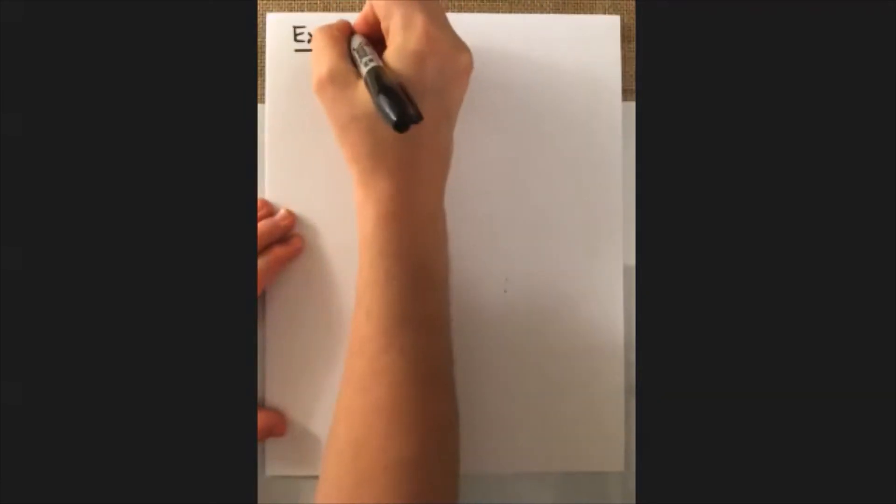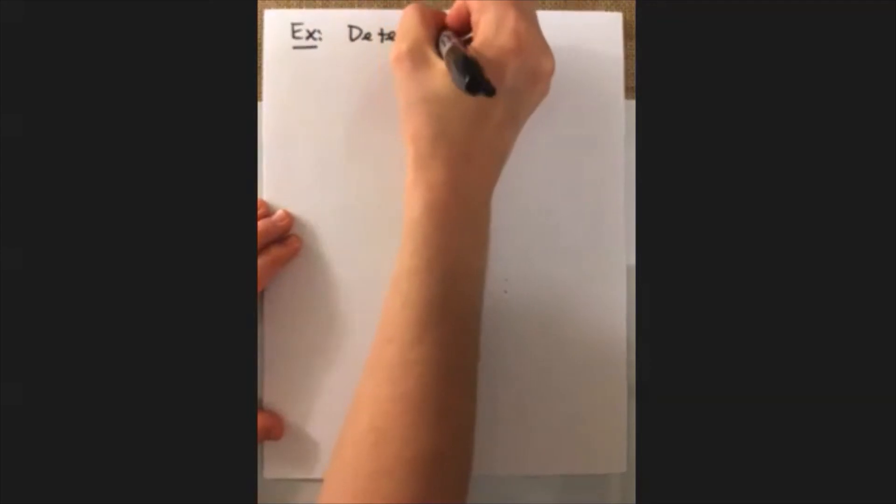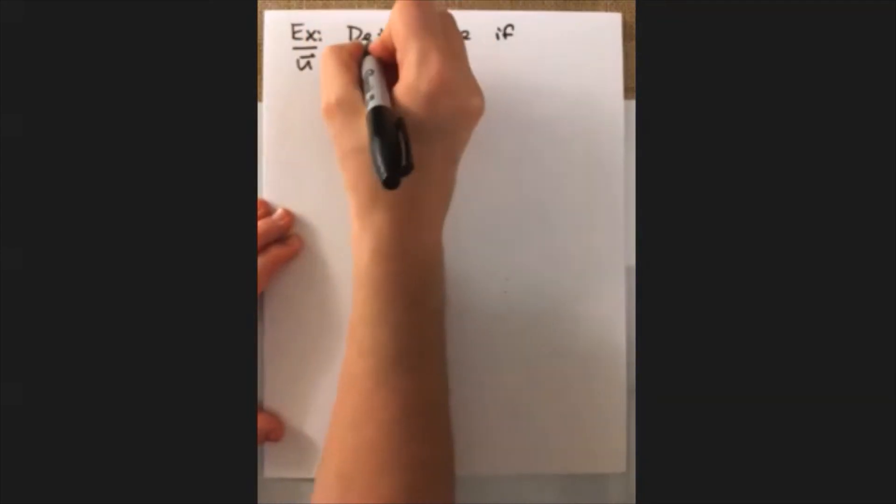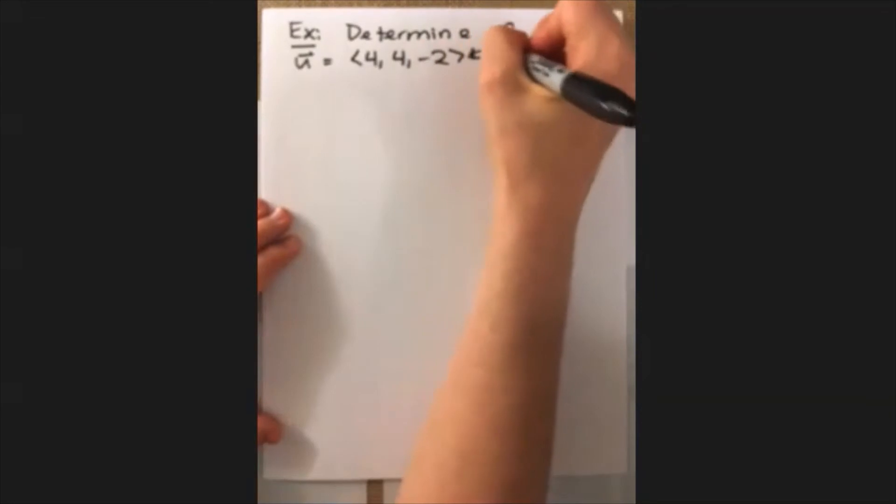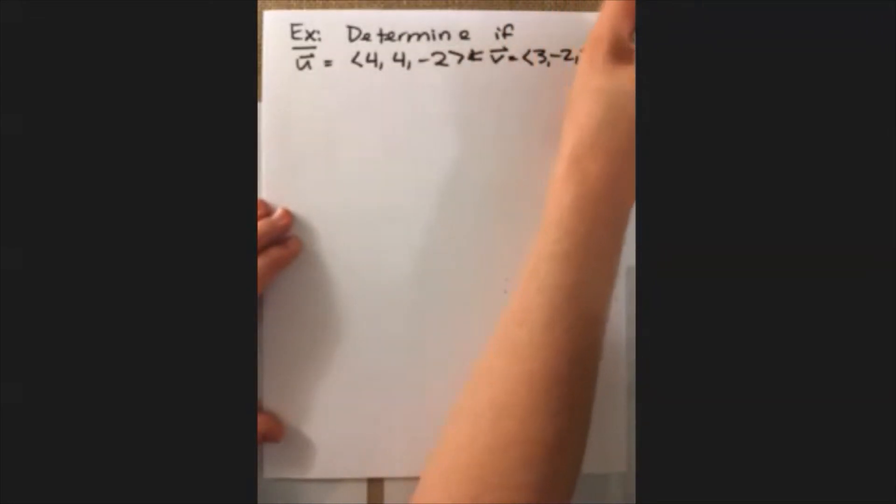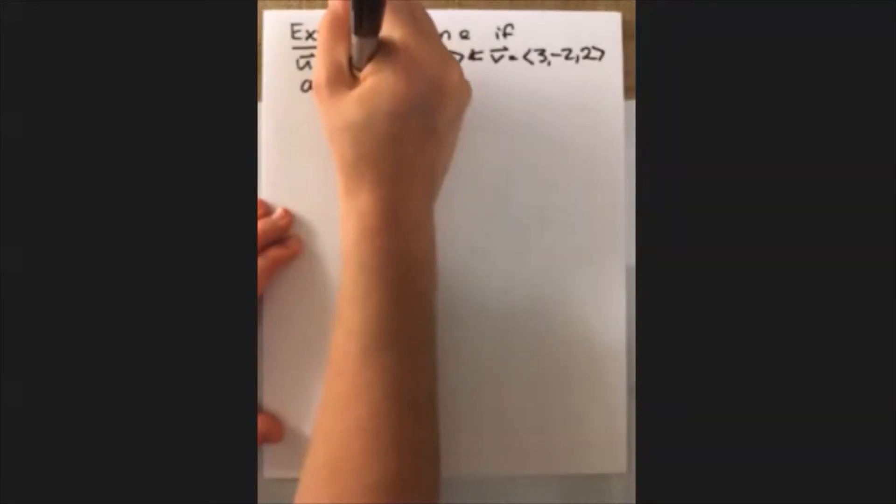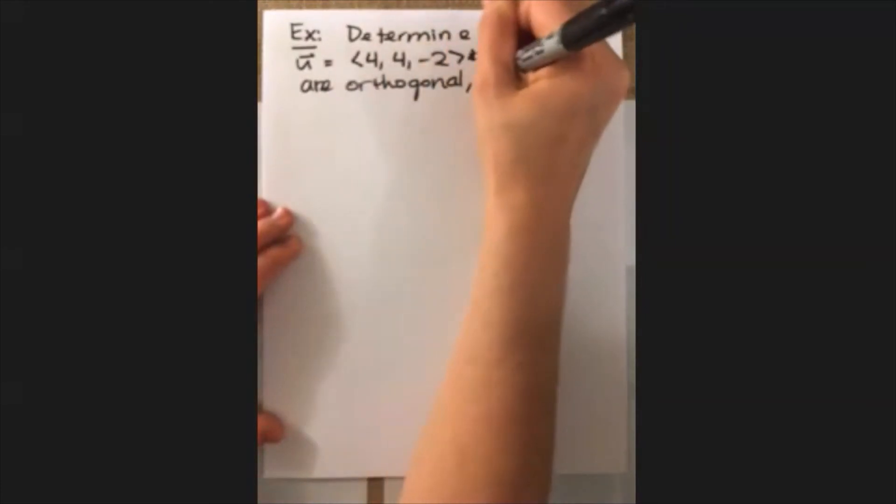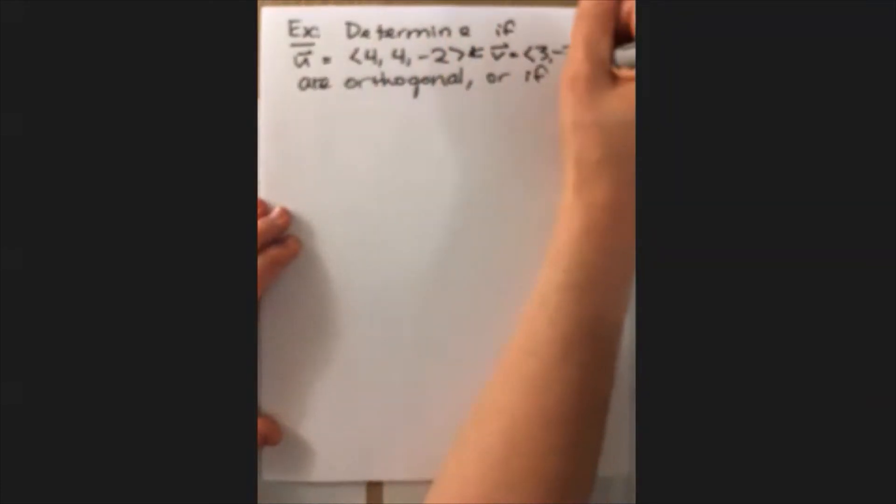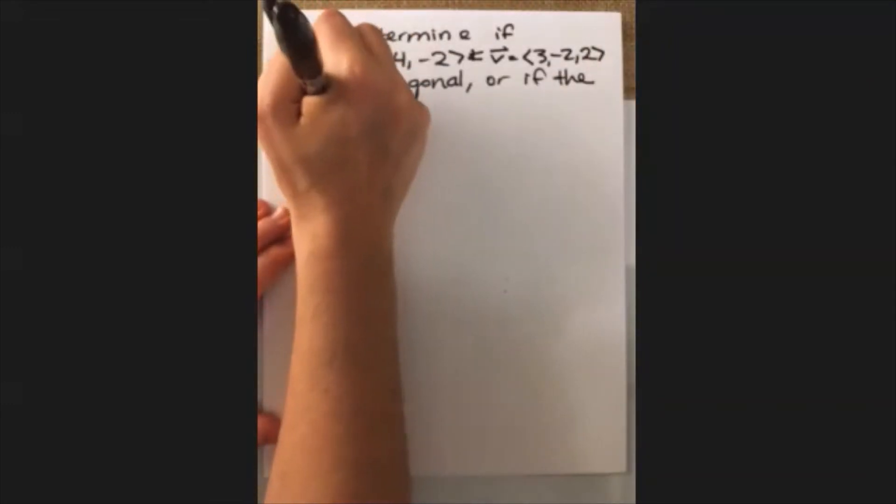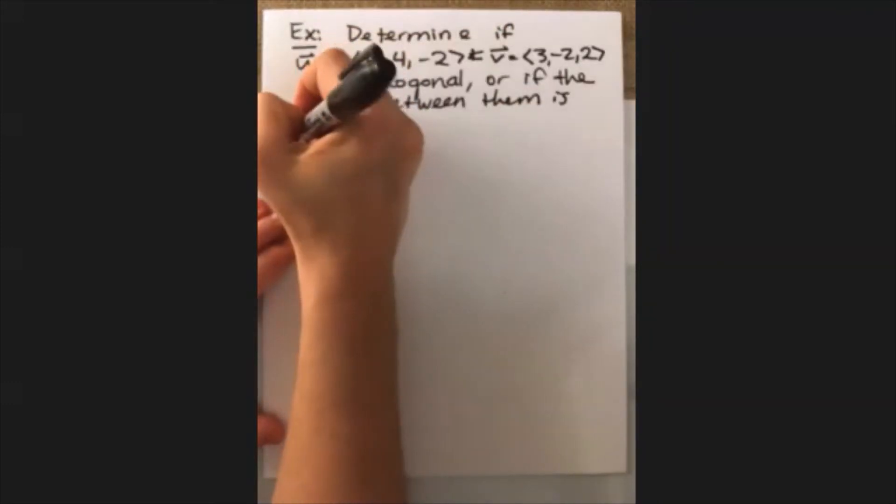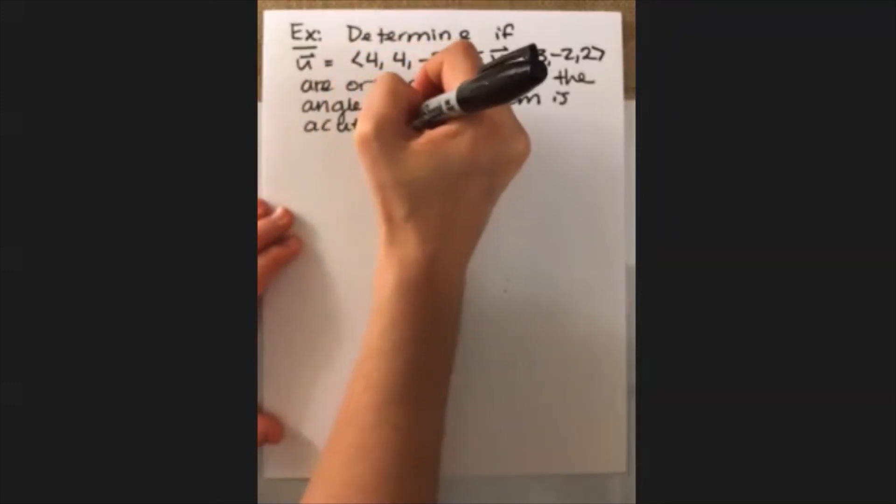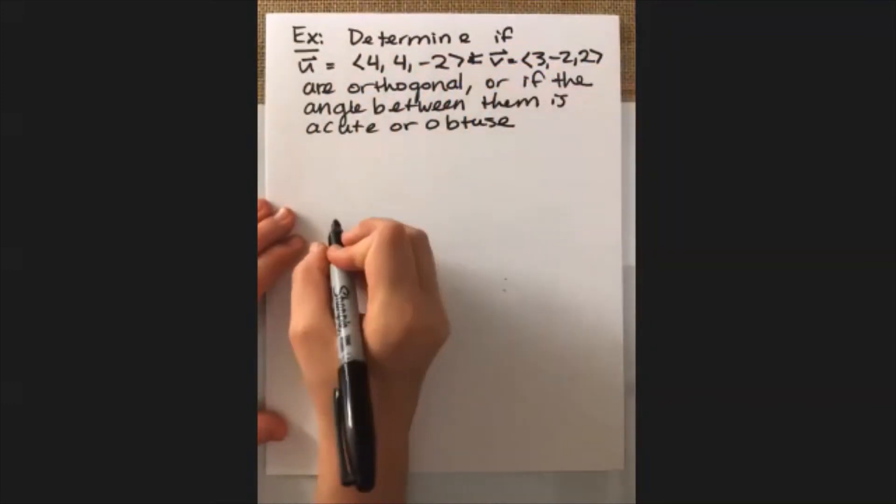We can look at a quick example of this. We're going to determine if u equal to <4, 4, -2> and v equal to <3, -2, 2> are orthogonal, or if the angle between them is obtuse or acute.